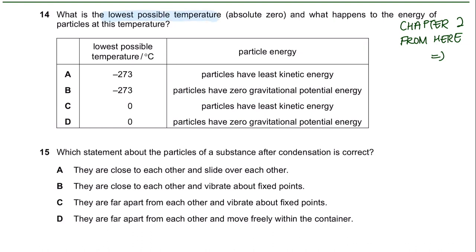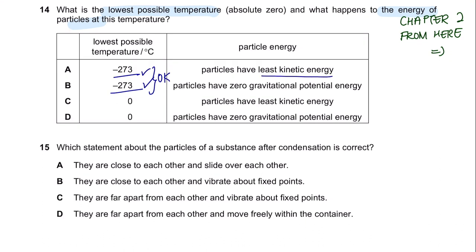Question 14. What is the lowest possible temperature—absolute zero—and what happens to particle energy at this temperature? The lowest possible temperature is −273 degrees Celsius, also known as zero Kelvin. At this temperature, particles have the least kinetic energy because they are not moving. So the answer is A.